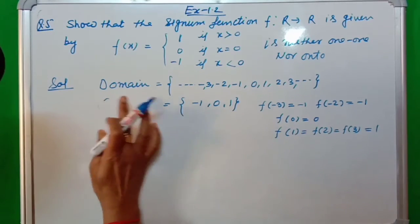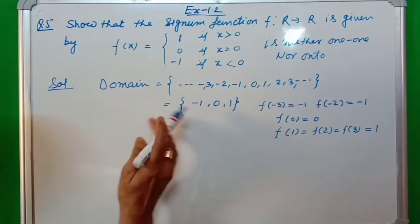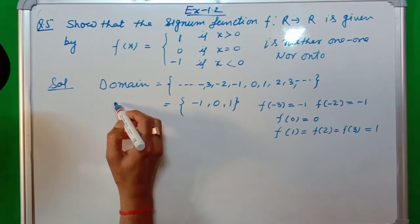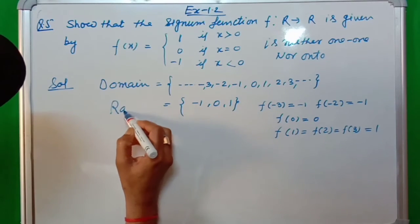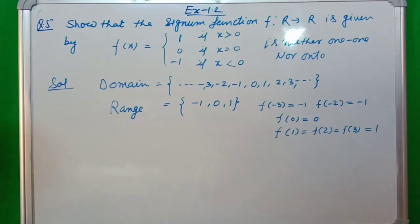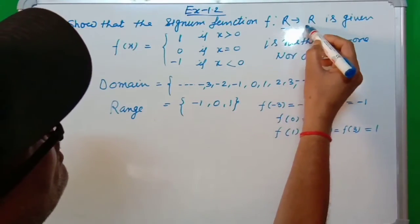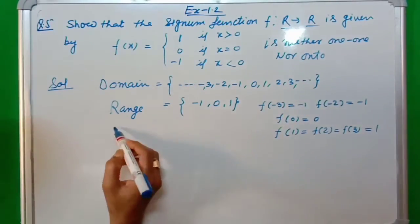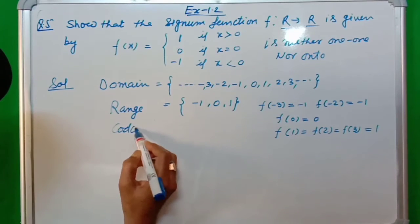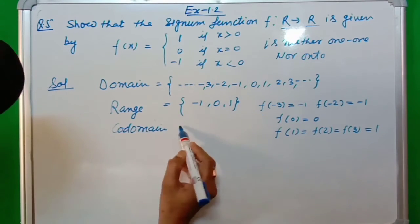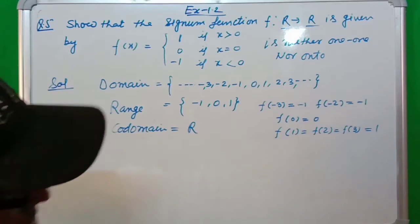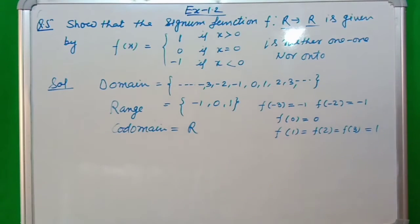Actually, this is the domain. But here, this is not codomain, this is range. Sorry, this is range. Since we are talking about domain, there are many elements. The domain is R and codomain is also R. Since the codomain is real numbers, the codomain is R.